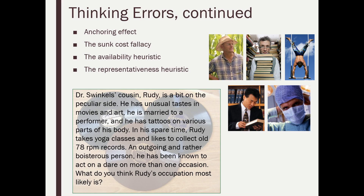You wouldn't be wrong for having trapeze artist come to mind first, but let's talk about why quantitatively we should not fall for that. Let's look at the base rate of these different jobs. There are about 2.6 million farmers in the country, about 366,000 librarians, 1.35 million lawyers, 950,000 doctors. I searched the O*NET — a compilation of all professions in the nation — and there isn't even a separate profession called trapeze artist. There are so few they're lumped together with performers and artists.